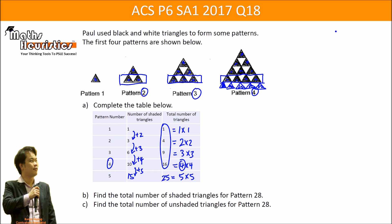Part B, we are supposed to find the total number of shaded triangles for pattern 28. Now for pattern 28, how can we visualize this? We can say that in pattern 1 your total number of shaded triangles is 1. Shaded triangles for pattern 2 can be expressed as 1 plus 2. This can be expressed as 1 plus 2 plus 3, then 1 plus 2 plus 3 plus 4, and this can be expressed as 1 plus 2 plus 3 plus 4 plus 5.